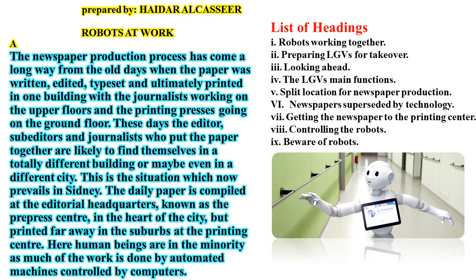Paragraph A: 'The newspaper production process has come a long way from the old days when the paper was written, edited, typeset and ultimately printed in one building, with the journalists working on the upper floors and the printing presses going on the ground floor.' This talks about the production of the newspaper and how it has changed over time. That is the main idea.